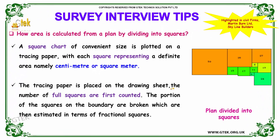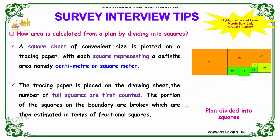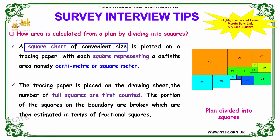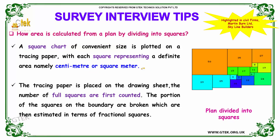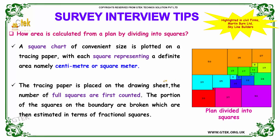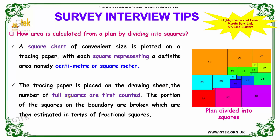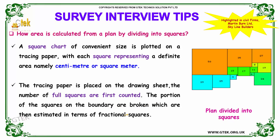Our next question is: how is area calculated from a plan by dividing into squares? A square chart of convenient size is plotted on tracing paper, with each square representing a definite area such as a centimeter or square meter. The tracing paper is placed on the drawing sheet. The number of full squares is counted first, then the portions of squares on the boundary that are broken are estimated in terms of fractional squares.